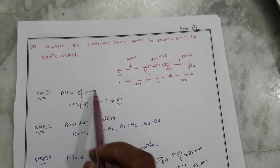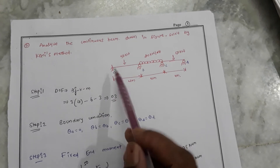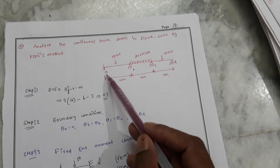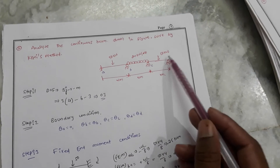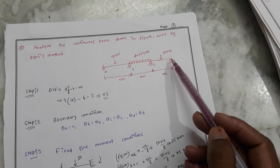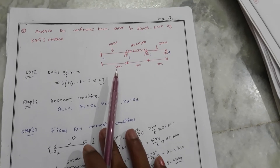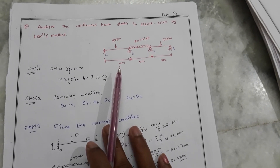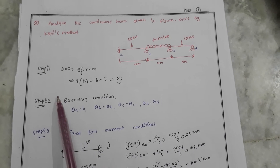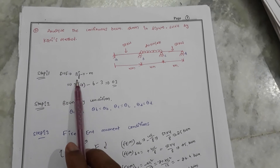Today we will discuss analysis of beams using the Corners Method. We have three members — one is fixed and one is a roller. This is the condition. To determine the bending moment diagram, we need to draw the bending moment diagram for this beam using the Corners Method.